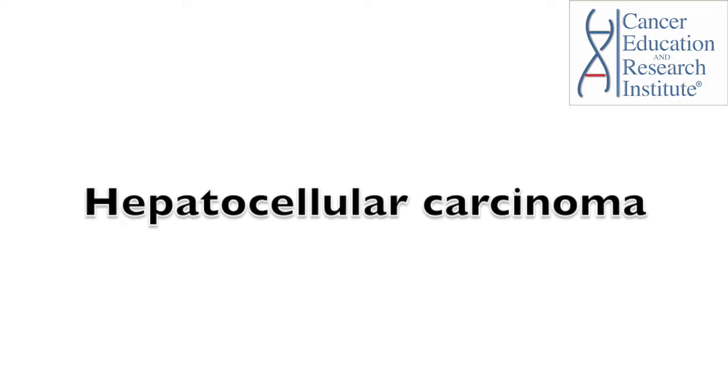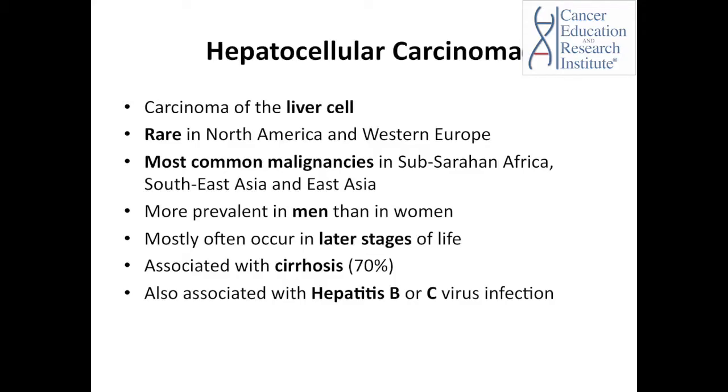Some carcinomas are named for their cell of origin, such as hepatocellular carcinoma or renal cell carcinoma. Hepatocellular carcinoma is the primary carcinoma of the liver cells. It is rare in North America and in Western Europe, but it's one of the most common malignancies in parts of Sub-Saharan Africa, Southeast Asia, and East Asia.